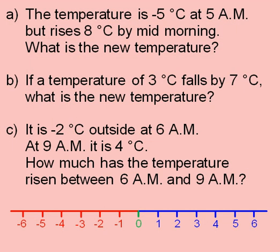I'm now going to answer these questions using this number line here to help me. The first question says that the temperature is minus 5 degrees C at 5 a.m., which I show on the number line here. The temperature rises 8 degrees, so I'm going to move 8 degrees along the number line in this direction.